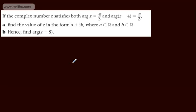In this video, we'll do another question looking at the locus of a complex number. If a complex number z satisfies both arg(z) equals π/3 and arg(z-4) equals π/2, in part a we're asked to find the value of z in the form a + ib where a and b are real numbers, and in part b it says hence find arg(z-8).